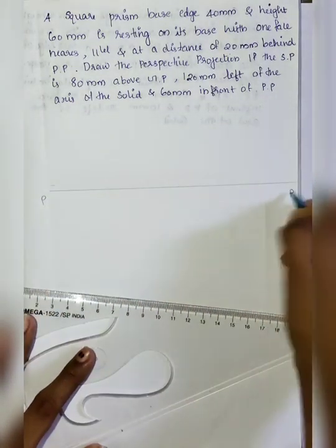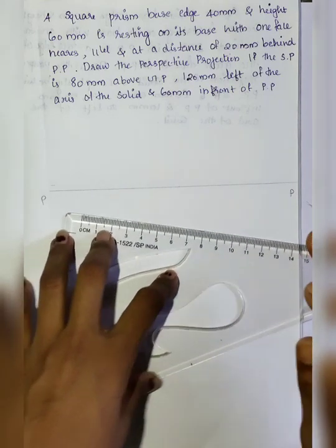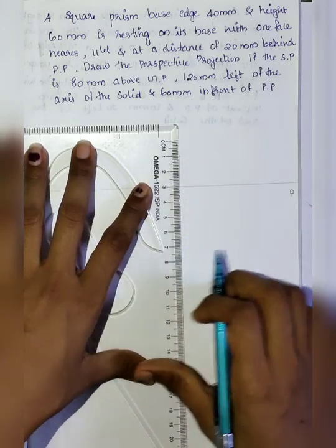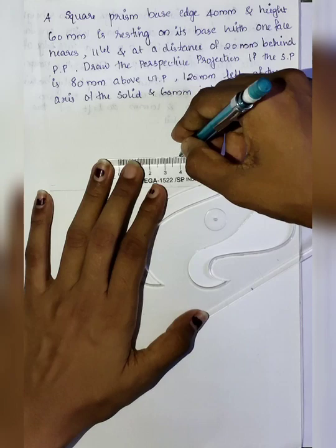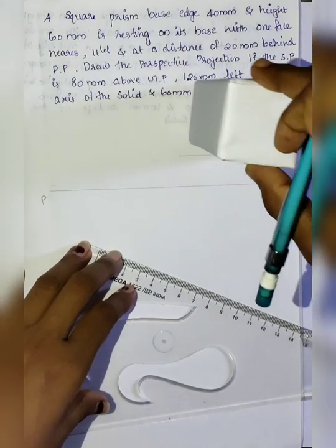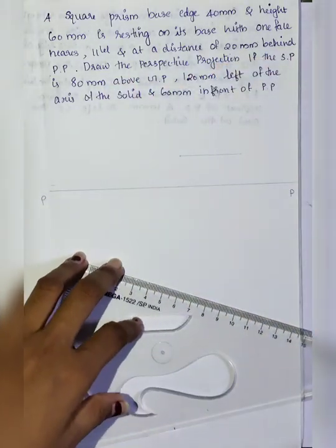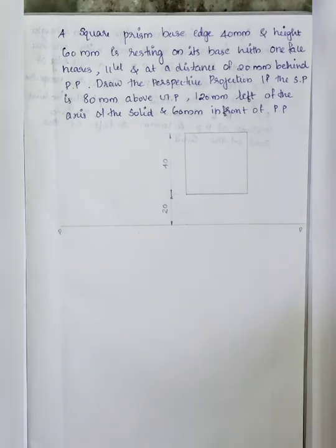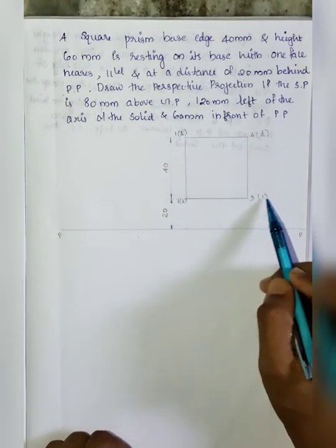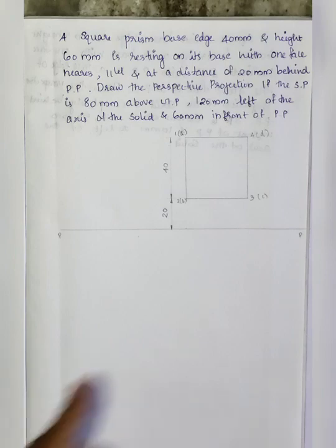The face is the base. The front view of the square plane touches the picture plane in the same way. The solid is 20mm behind the picture plane, and the base edge is 40mm in length. In the top view, the naming convention is 1, 2, 3, 4 for the top base points and A, B, C, D for the bottom base points. The solid is placed 20mm behind the picture plane in the top view.